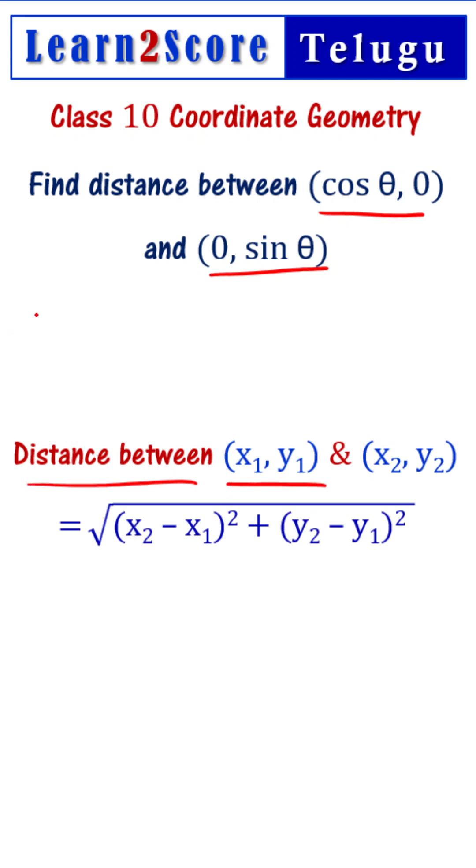For this formula, we use x₁, y₁ equals cos θ, 0. And x₂, y₂ is 0, sin θ.